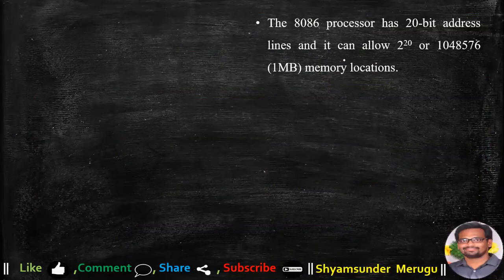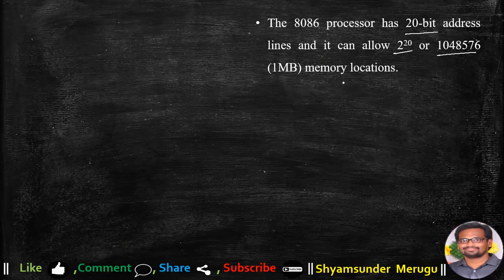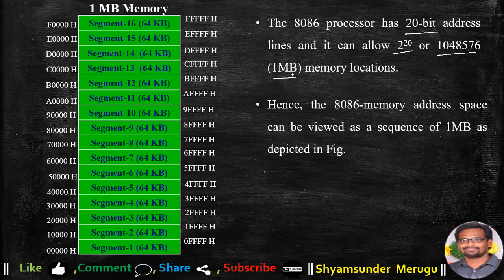We know that the 8086 microprocessor has 20 bit address lines. So from these 20 address lines, by taking 2 power 20, we can access this much of memory. This entire number gives us 1MB memory, so there will be 1MB memory that can be accessible by the 20 address lines.